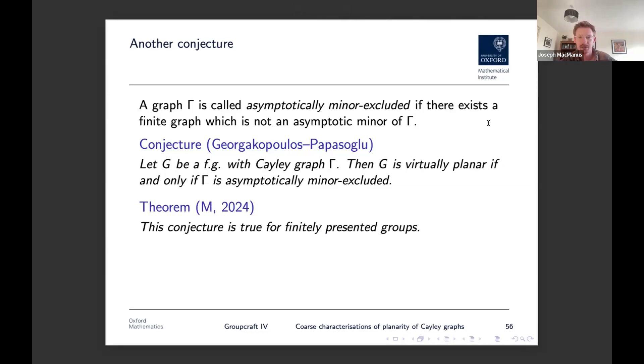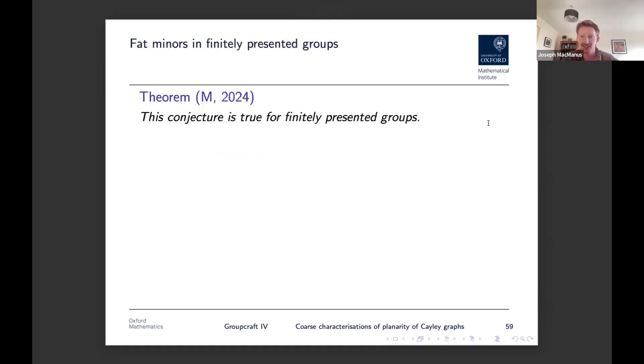It turns out this conjecture is true for finitely presented groups. It's still open for finitely generated groups in general, but it's ended up being true for finitely presented groups. And so some corollary of this is that if you're a finitely presented group G and you look inside your QI class and within that QI class you find some minor excluded graph, then that's enough again to deduce that your group is virtually planar. So once again, just some mundane objects sitting inside your QI class has forced very strong structural restrictions onto your group. And yeah, this slide is now saying the same thing again. I guess what I can point out here is that the proof of this theorem is very, it's very hands-on.